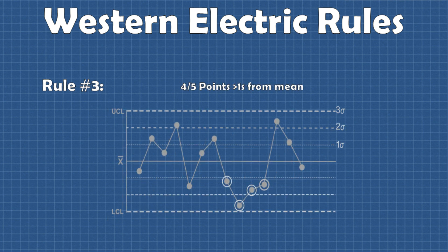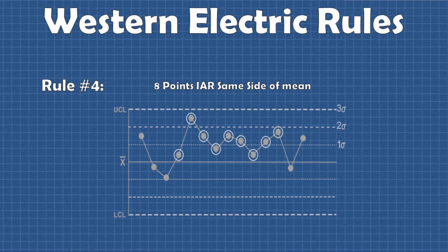Similarly to rule number two, rule three looks to see if four out of five data points are greater than one standard deviation from the mean on the same side. Western Electric's last rule, rule number four, tests to see if there is a run of eight data points in a row on the same side of the mean.